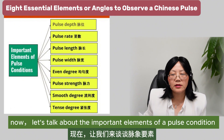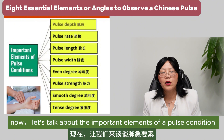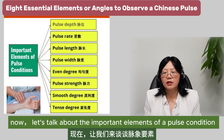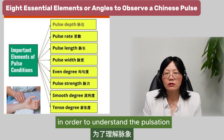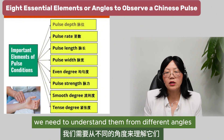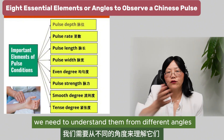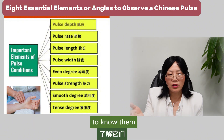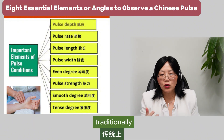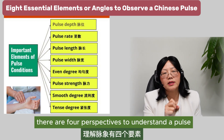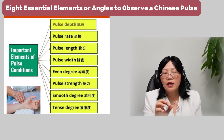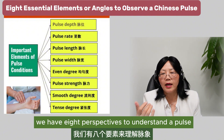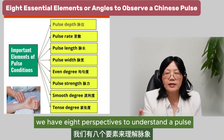Now let's talk about the important elements of pulse conditions. In order to understand the pulsation, we need to understand them from different angles. Traditionally, there are four perspectives to understand a pulse. In modern days, we have eight perspectives to understand the pulse.